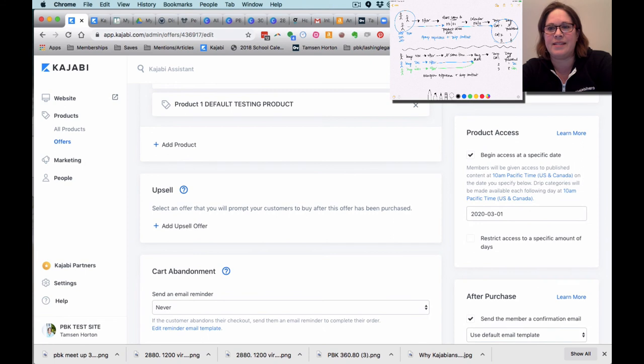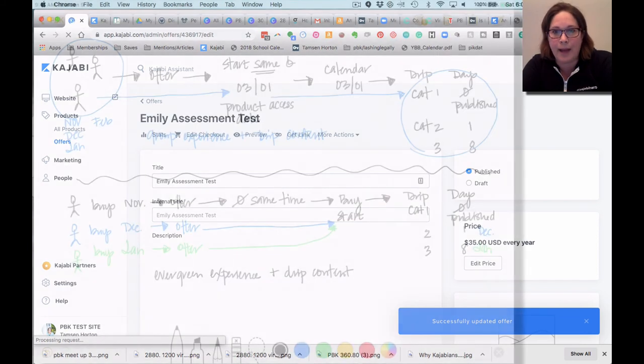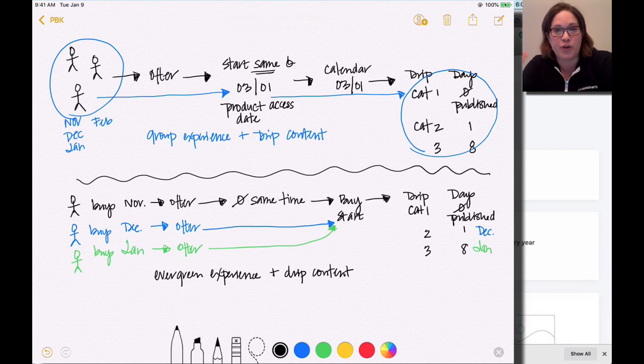And then I'll hit save. So whenever someone's buying this offer, November, December, January, February, whenever I put it up, nobody gets the product until that March 1st date.